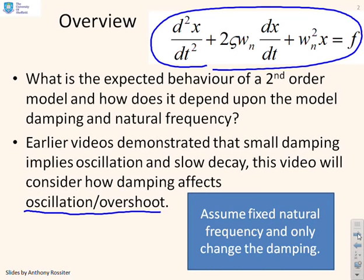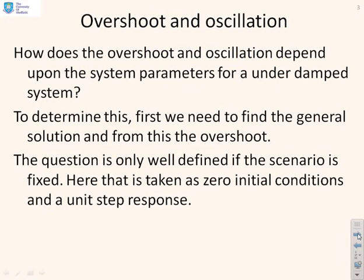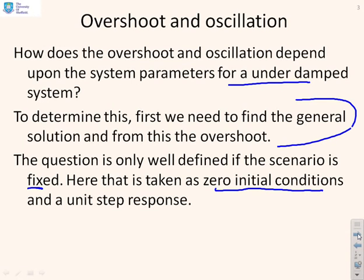We're going to assume that the natural frequency is fixed, because that allows us to get better insights. How does overshoot and oscillation depend upon the system parameters for an underdamped system? We need to find a general solution for this differential equation, and once we've found the solution, we can identify the overshoot. The question is only well-defined if you fix the scenario, so we're going to take zero initial conditions. What will not depend upon the initial conditions is the general principles of the oscillation frequency and the ratio of peaks or the decay rates.